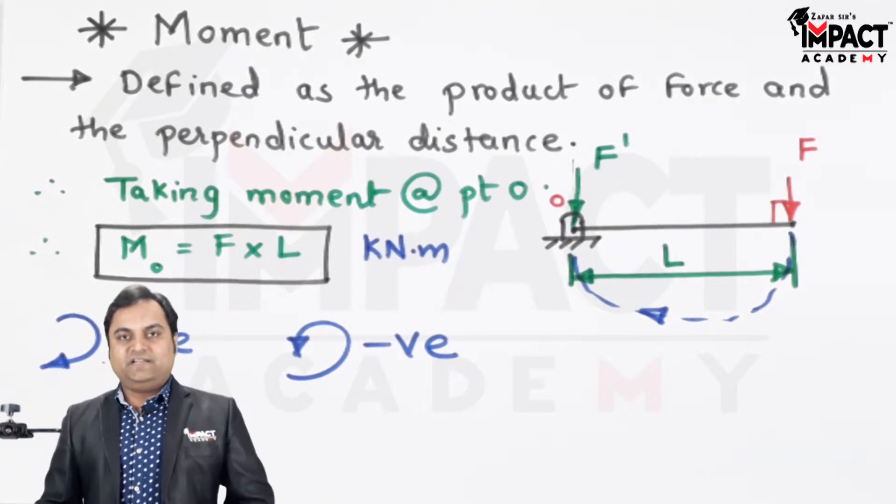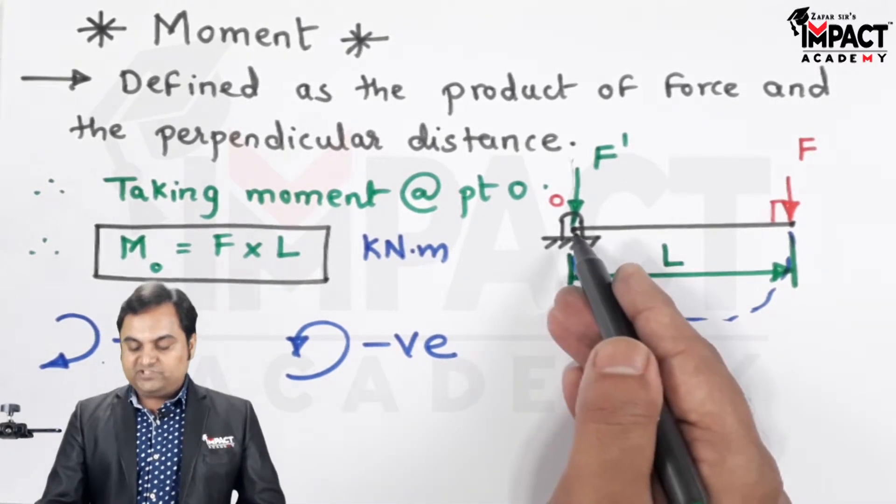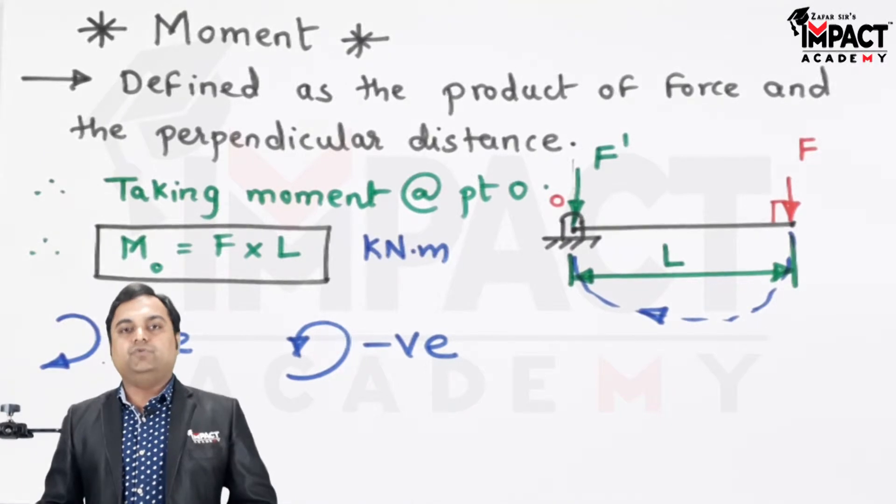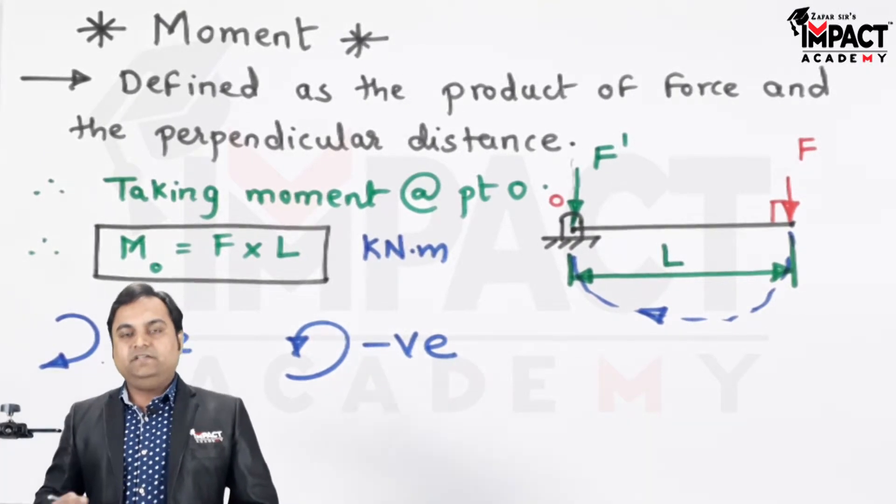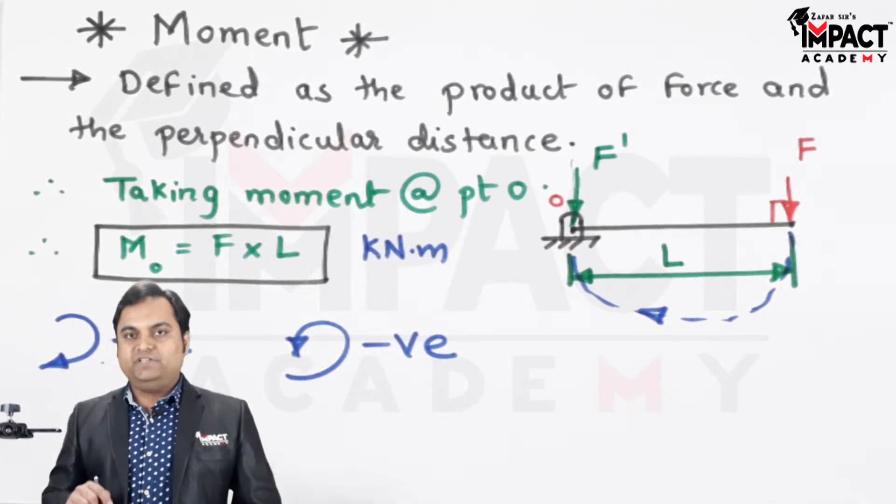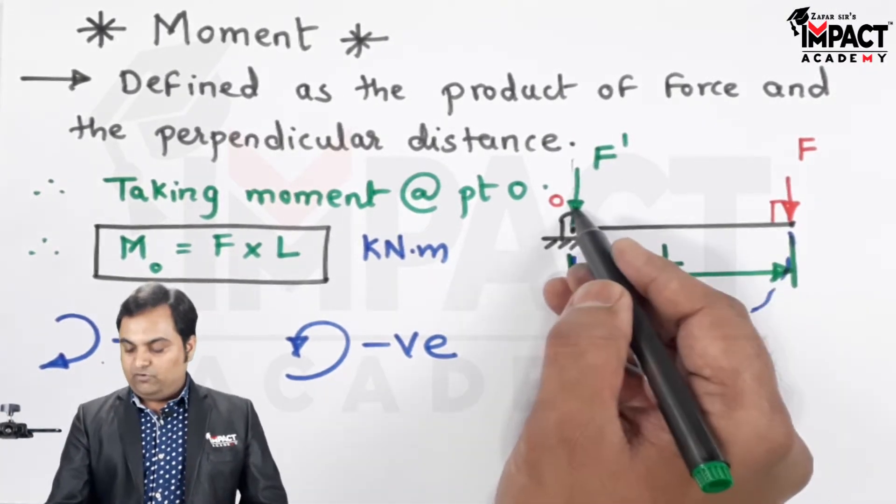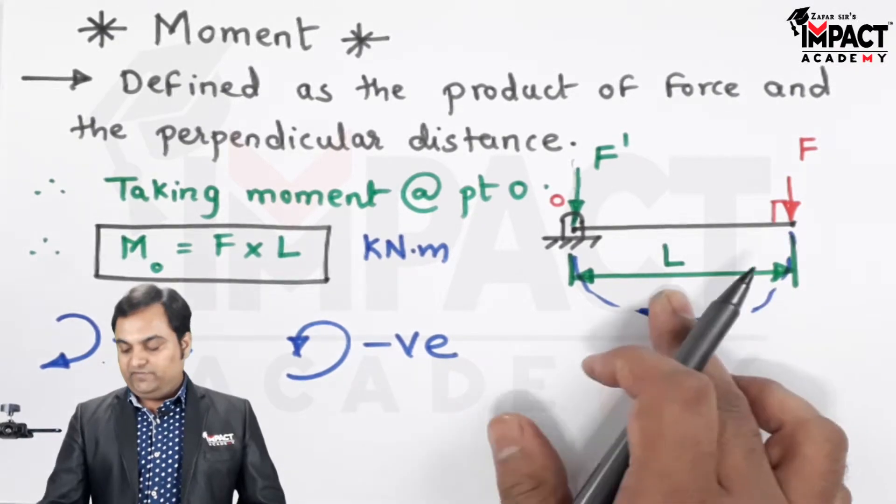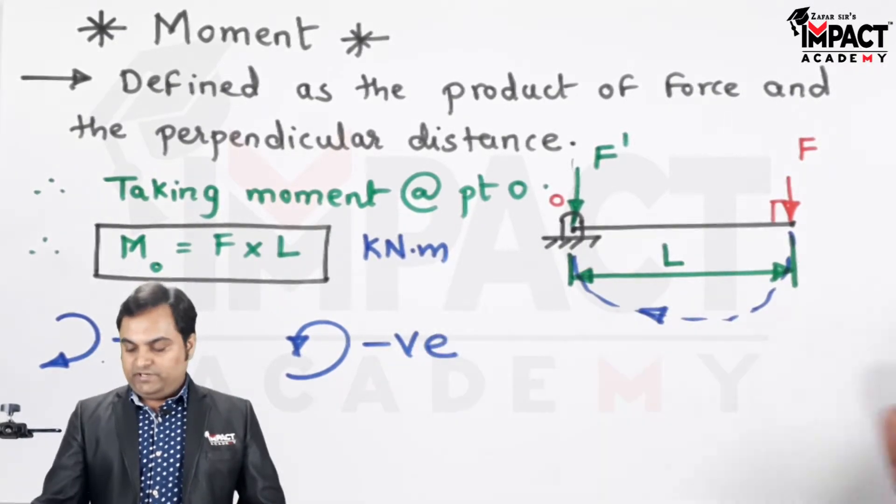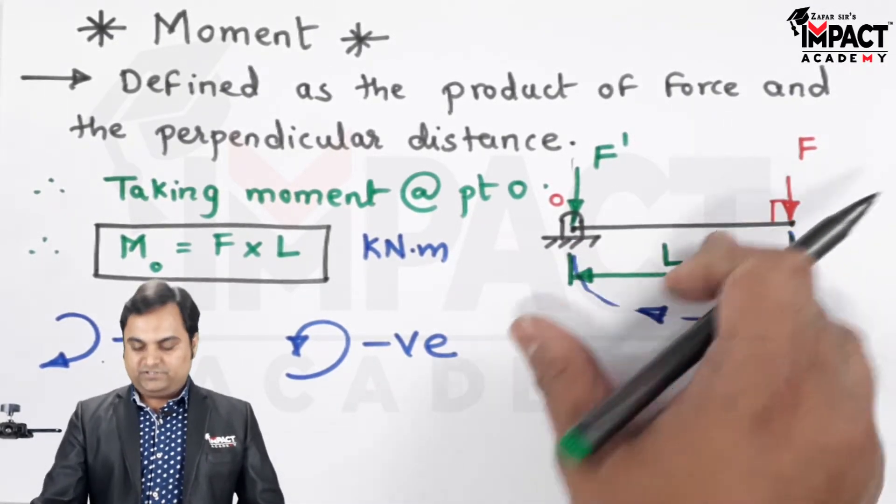It also says that whenever you have a force passing through the point about which you want to calculate the moment, that moment of the force would be zero because the perpendicular distance is not there. It is simply understood that if we move away from this point, then only we are going to get the moment because it is force times the perpendicular distance.